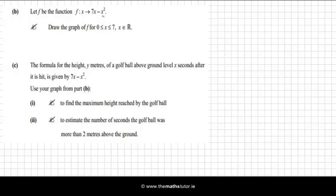The coefficient of the x squared term is what determines the shape of the quadratic function. In this case, the coefficient of the x squared term is minus 1, because there's a minus in front of the x squared. And that means that the shape of this function will look like a frown.